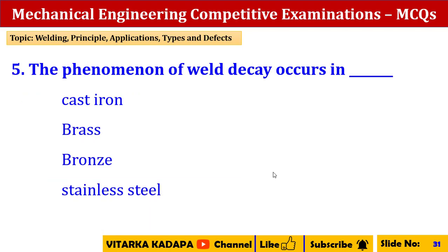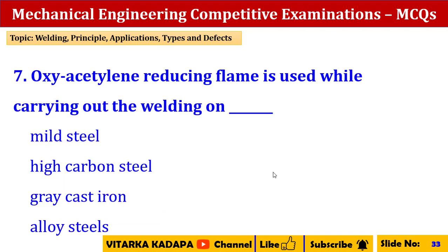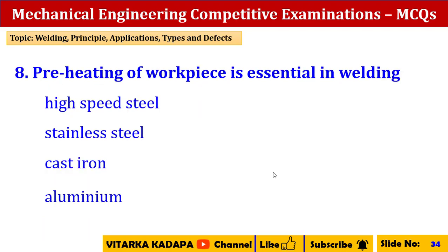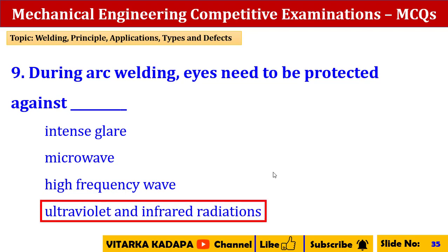The phenomenon of weld decay occurs in stainless steel. Grey cast iron is usually welded by the arc welding process. Oxyacetylene reducing flame is used while carrying out welding on high carbon steel. Preheating of the workpiece is essential in welding cast iron. During arc welding, eyes need to be protected against ultraviolet and infrared radiations.